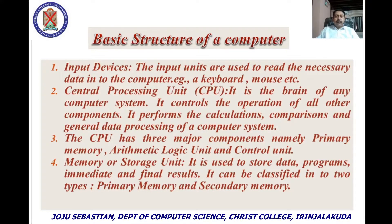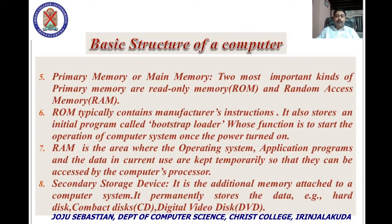A computer also contains a memory or storage unit. It is used to store data, programs, immediate and final results. It can be classified into two types: primary memory and secondary memory. Primary memory, or main memory — the two most important kinds of primary memory are read-only memory (ROM) and random access memory (RAM).